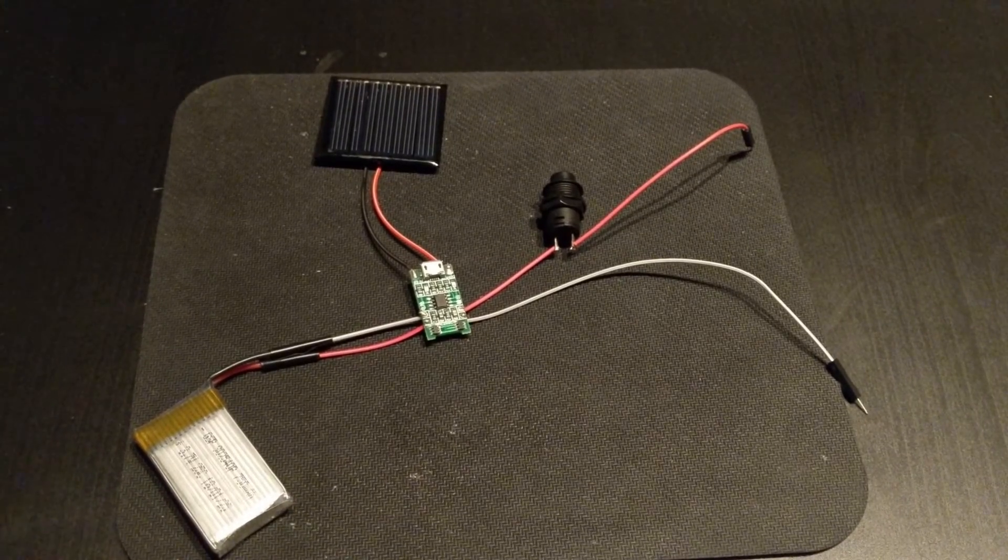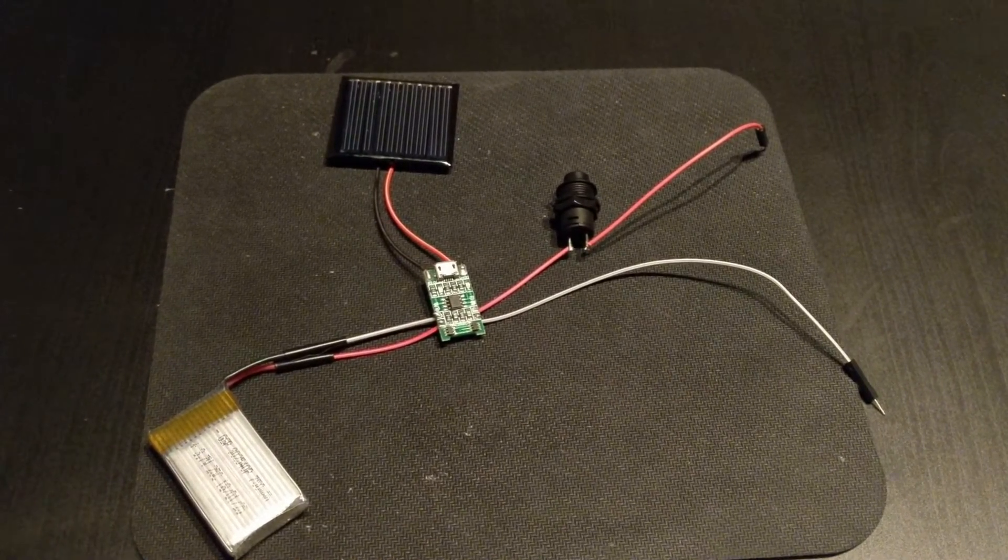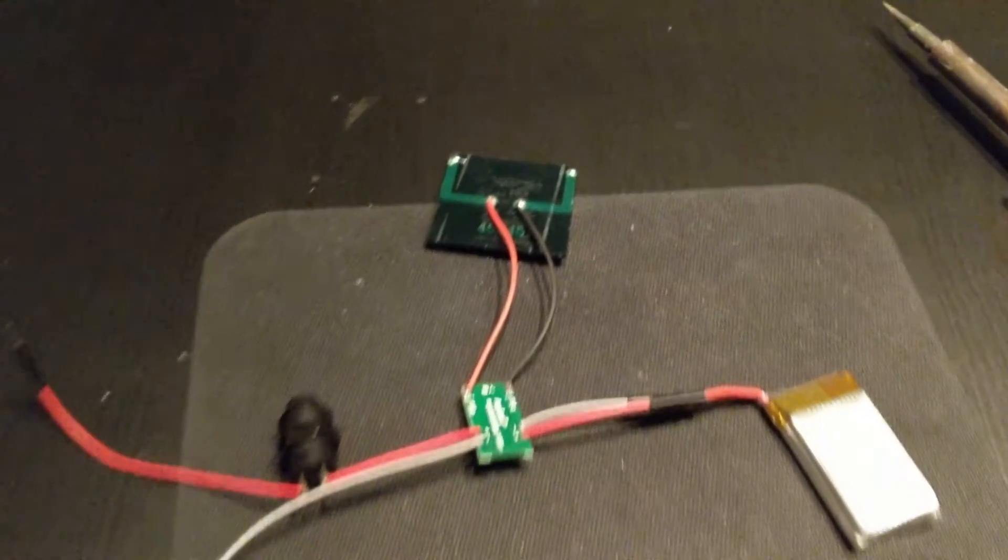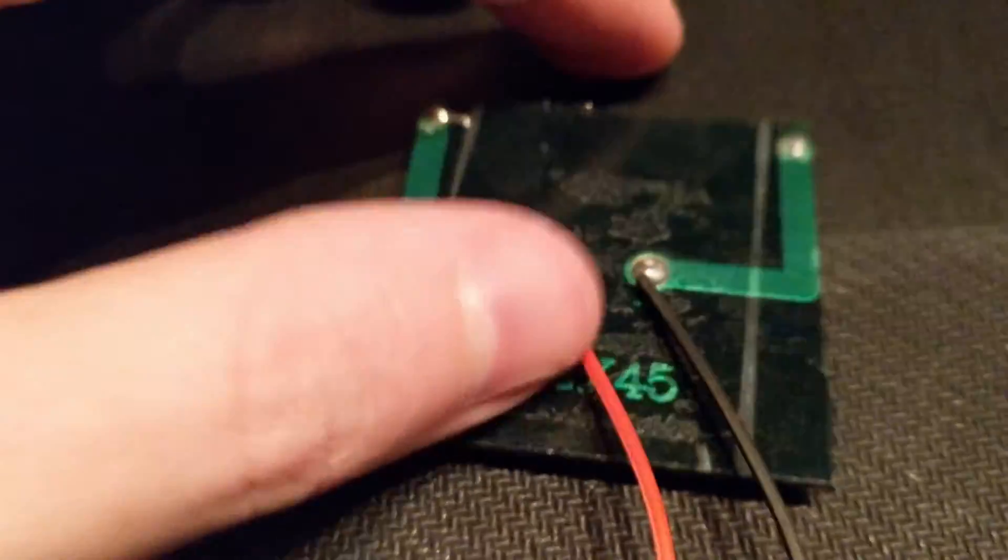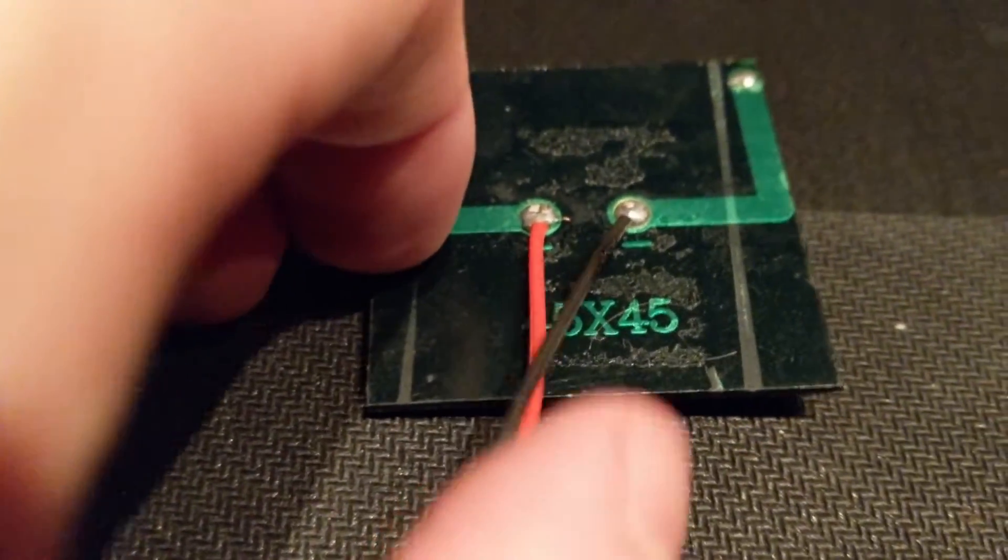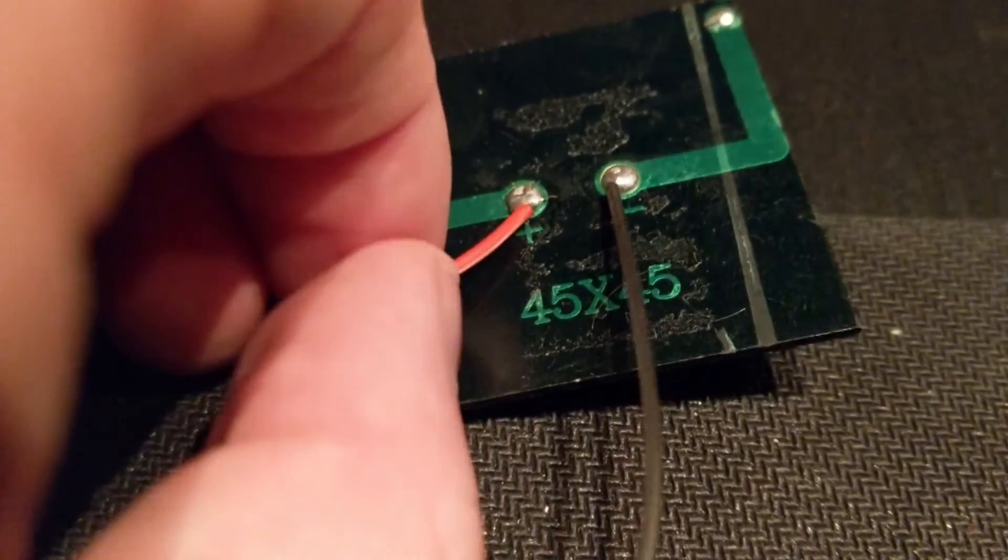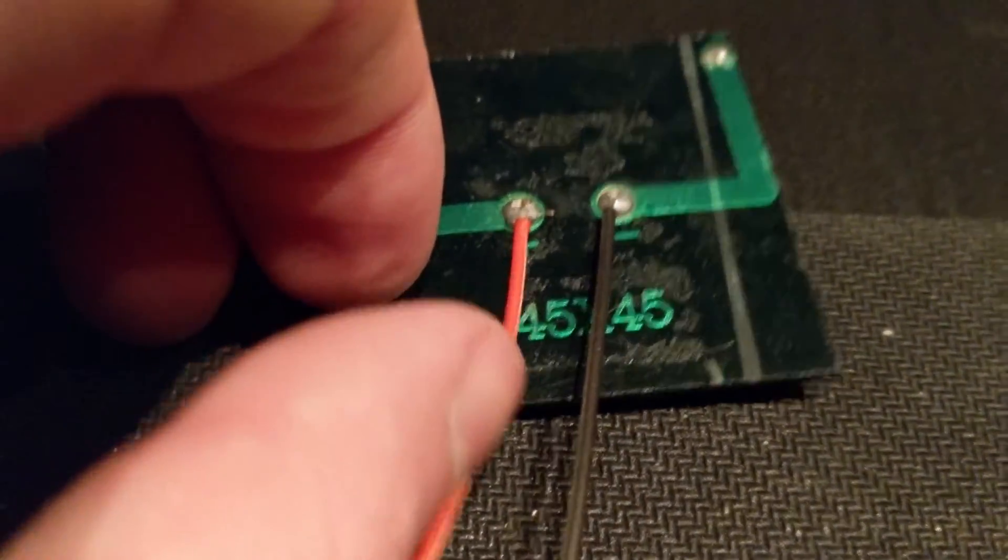For ease of explanation, I made a mock-up of everything put together. The solar panel connects to the board input. The board I am using also allows for charging with a micro USB cable. I haven't needed to use this though, other than when I initially charged the battery.